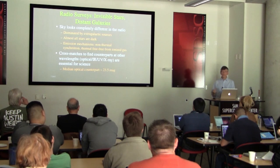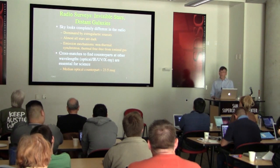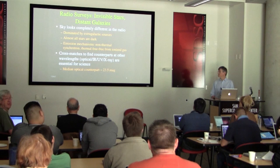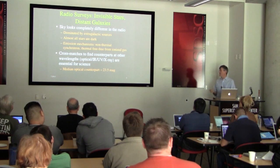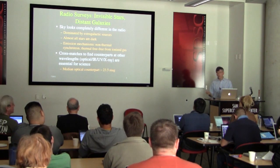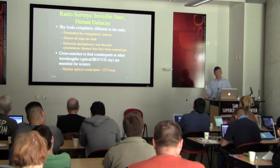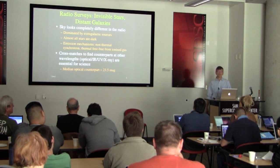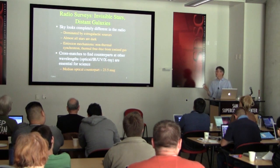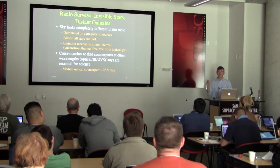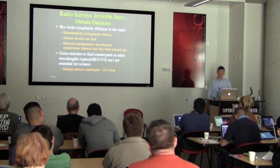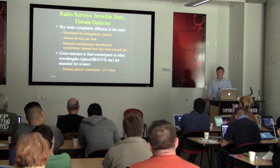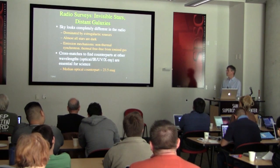Most stars are completely invisible in the radio — extremely faint. A good feature of that is you can do radio observations day or night. With the VLA, if you're not pointing within about 10 degrees of the sun, you don't even know the sun is there.